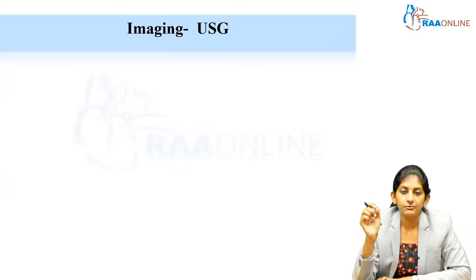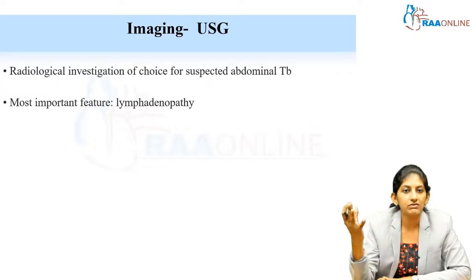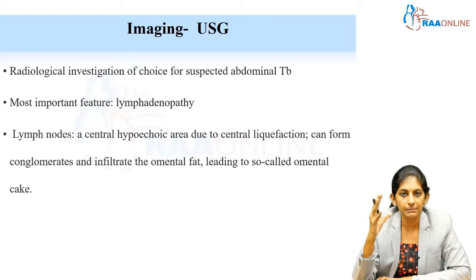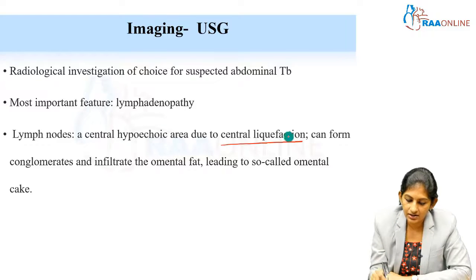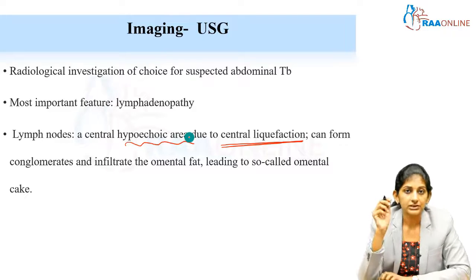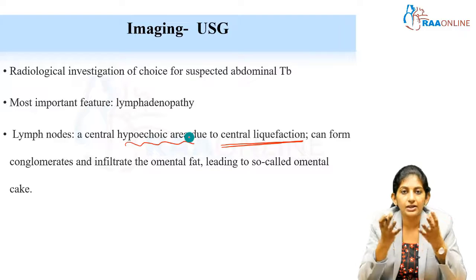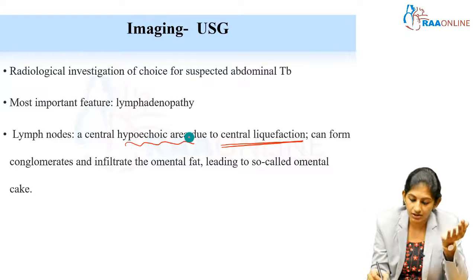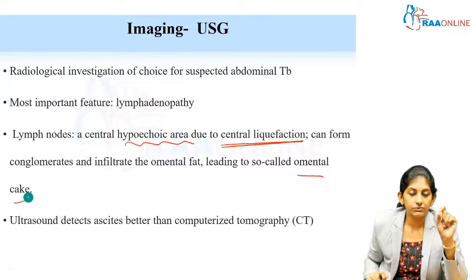Ultrasound is the first and foremost imaging modality of choice in pediatric abdominal tuberculosis, and the most common finding is lymphadenopathy. Tubercular lymph nodes have a typical feature: central liquefaction with a hypoechoic area. These lymph nodes can conglomerate together to form what is called an omental cake. Central liquefaction of lymph nodes on ultrasound should prompt consideration of abdominal tuberculosis. Ultrasound also detects ascites effectively.